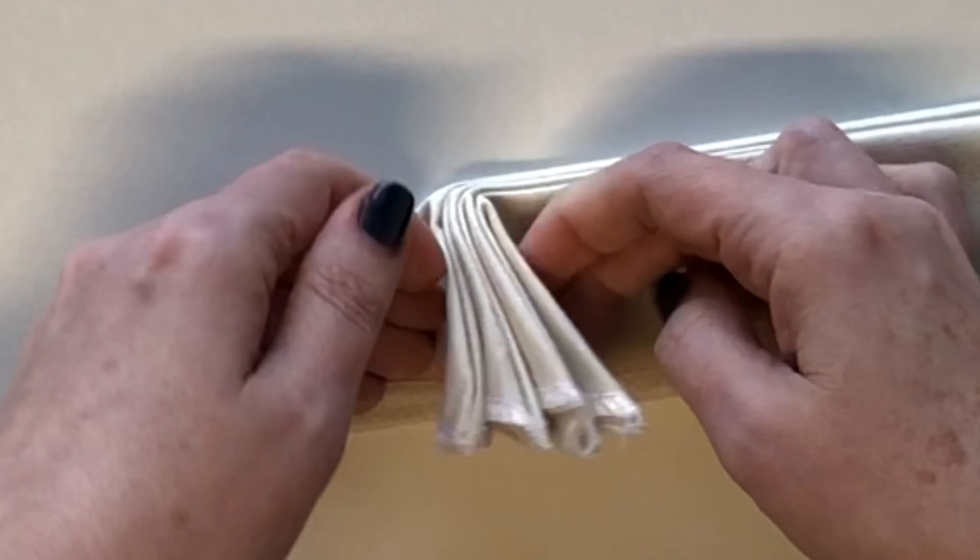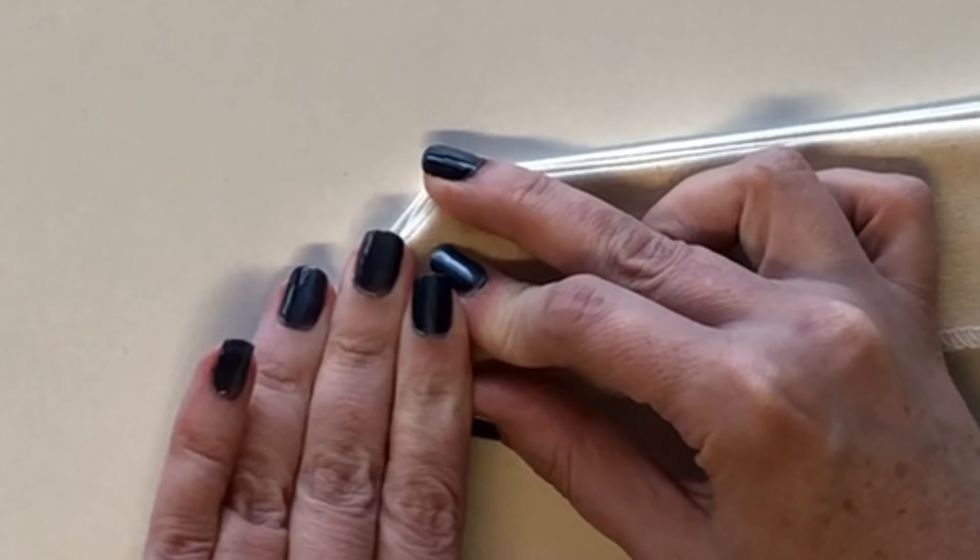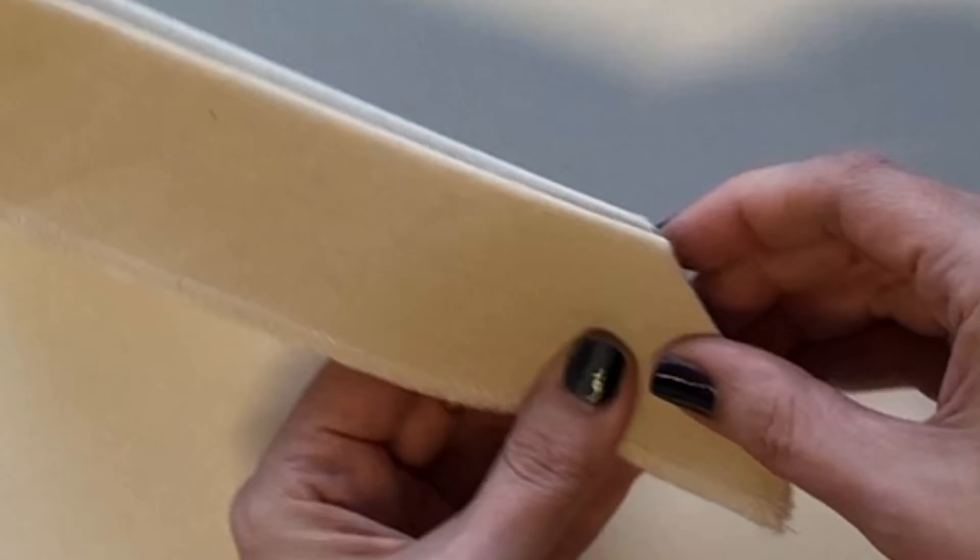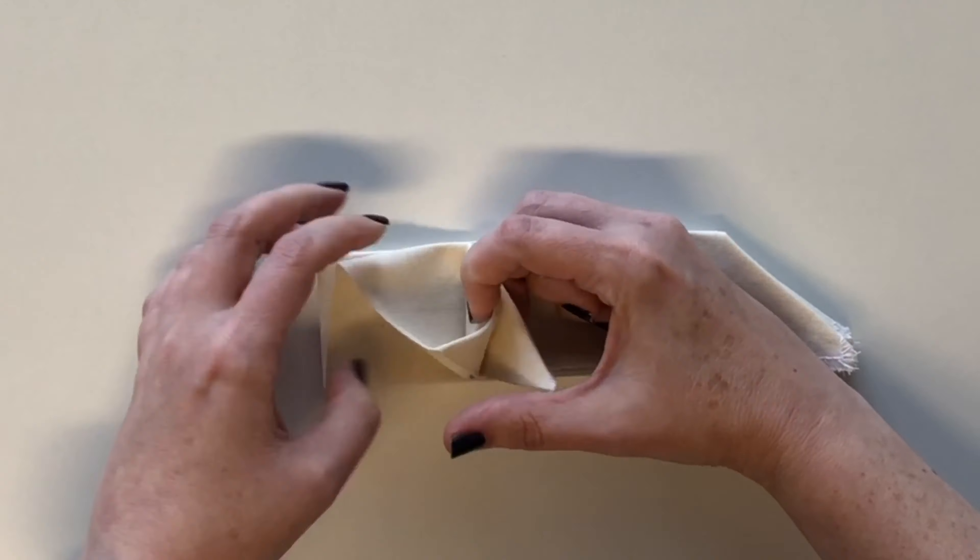Make sure that the last piece is also a triangle so all the raw edges of the fabric are pointing to the bottom. So then flip it over and do exactly the same on the other side.